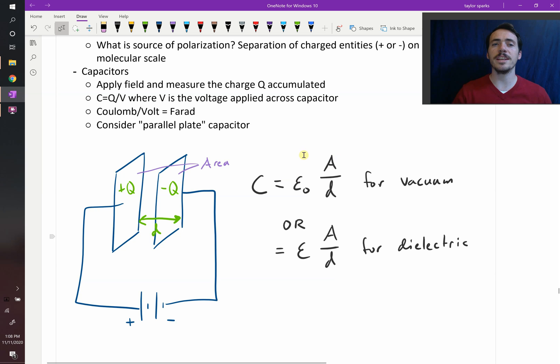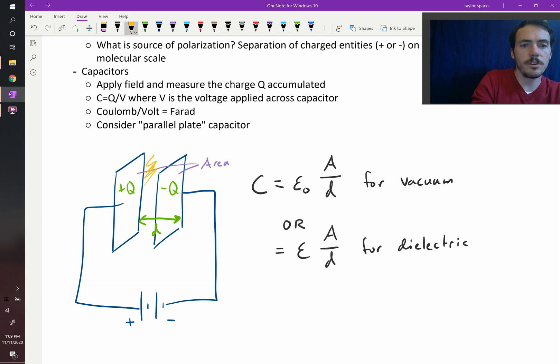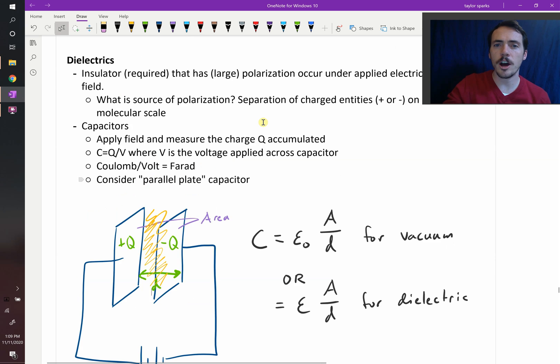Now, a way that we can increase the capacitance, which again is just the charge divided by the voltage, that's how we define it, is to put not air or vacuum between your material but put a material, a dielectric material in between your material. So why is it when I put a little bit of this dielectric material between those plates that I see any difference in the capacitance?